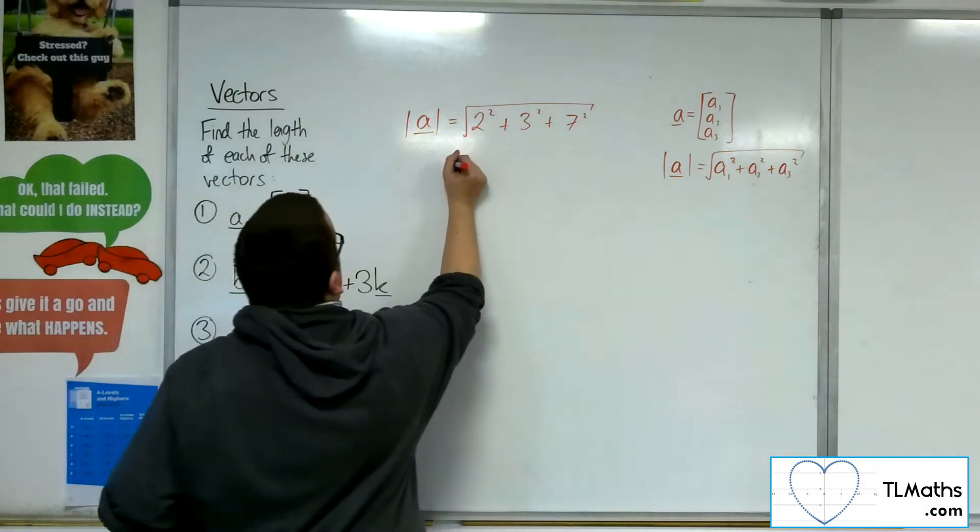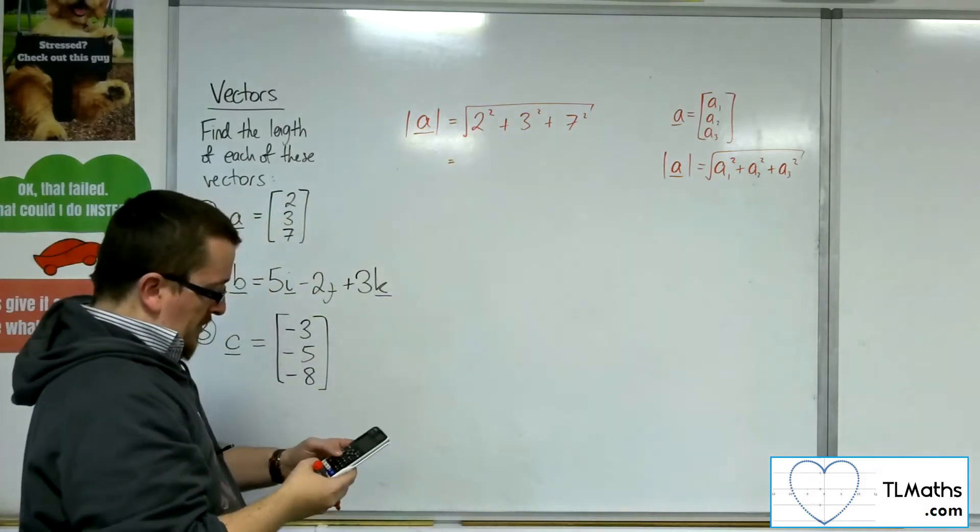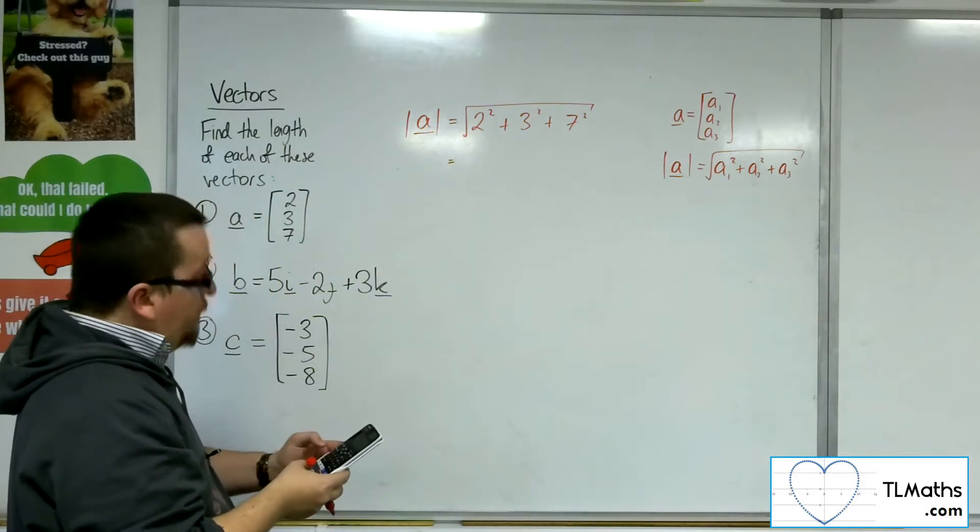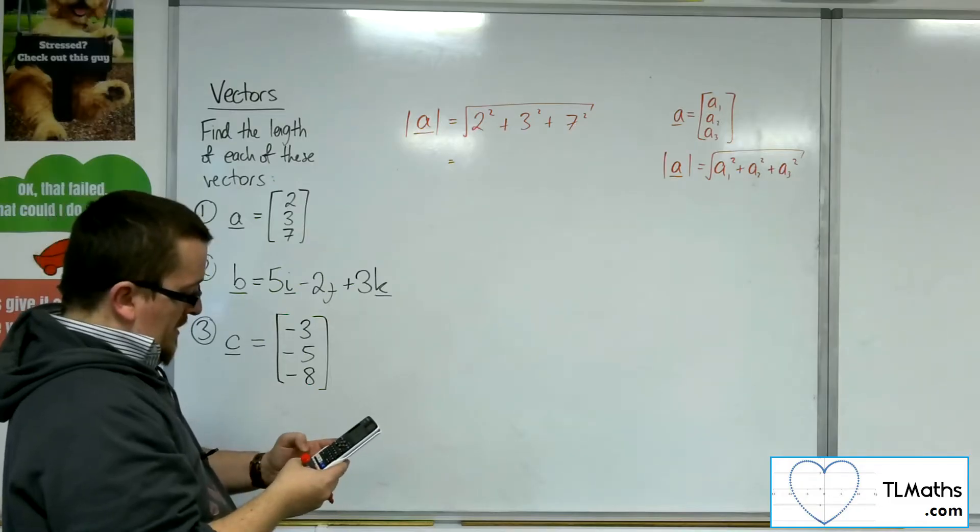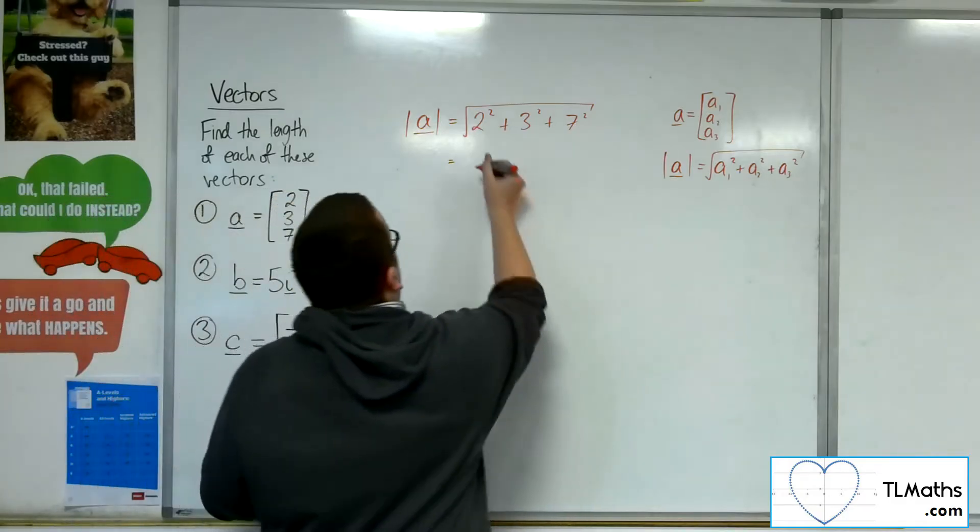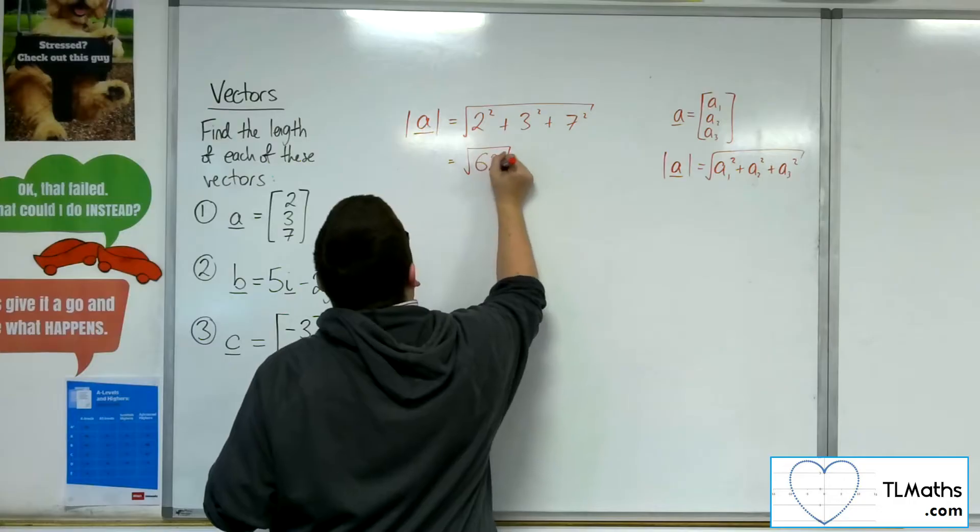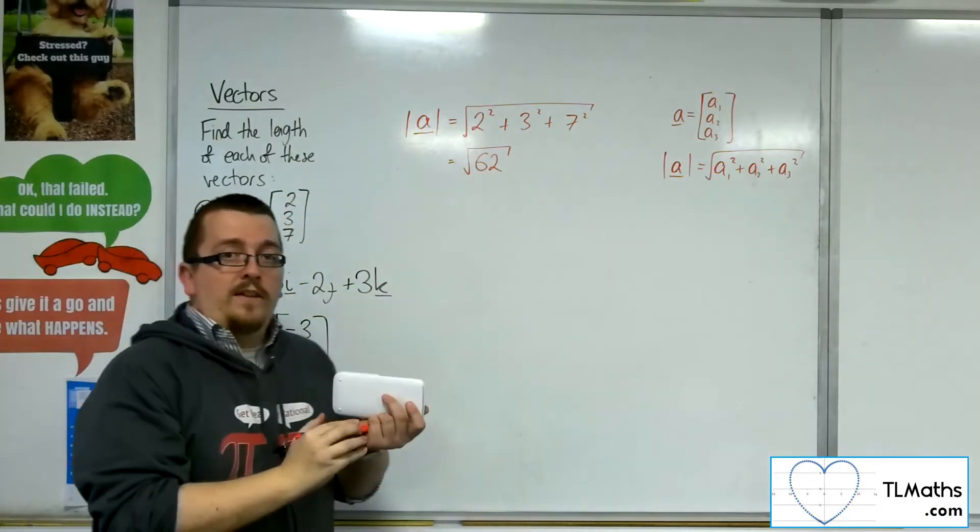So, the length of A is just the square root of 4 plus 9 plus 49, so the root is 62. So, that's the length of A.